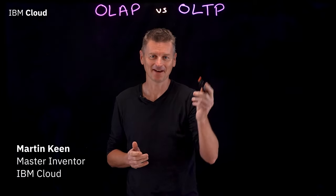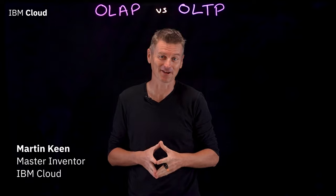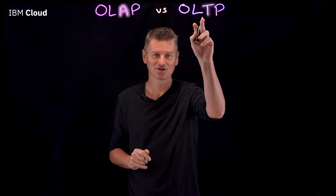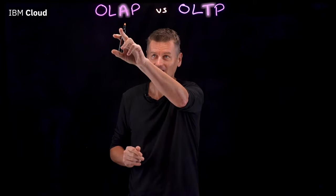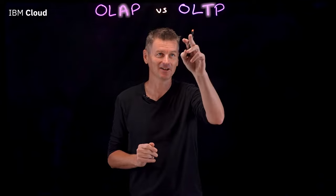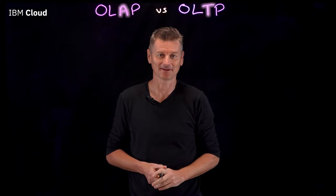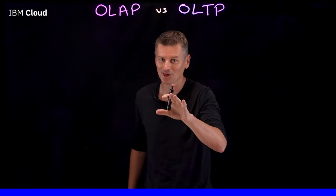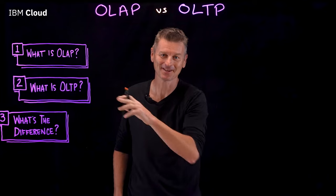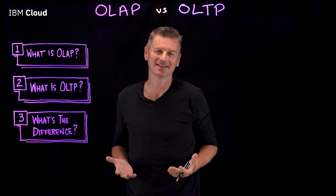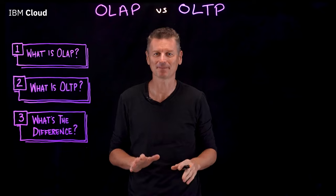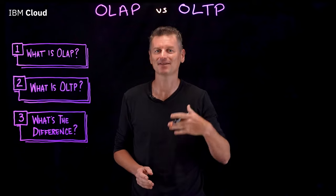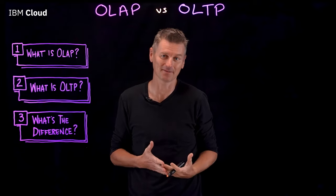OLAP and OLTP are often confused with one another. So what's the difference? Analytical and transaction — as in online analytical processing and online transaction processing. That's it, that's the difference. But hold up — when it comes to using data to make smarter decisions, it's not a question of choosing between OLAP and OLTP. It's a question of how to make the best use of both processing types for your situation.